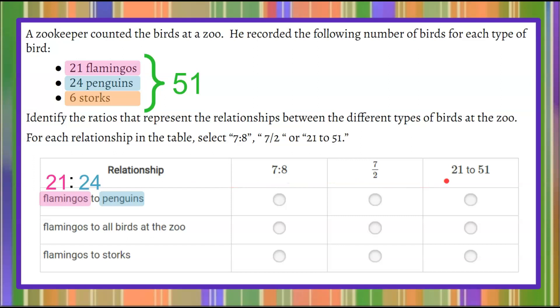I can see that none of my answer choices are 21 to 24. The reason being is we can simplify this. Each one of these values is divisible by 3. 21 divided by 3 is 7. 24 divided by 3 is 8. So now that I have my flamingos to penguins in simplest form, I can identify that the ratio is 7 to 8.